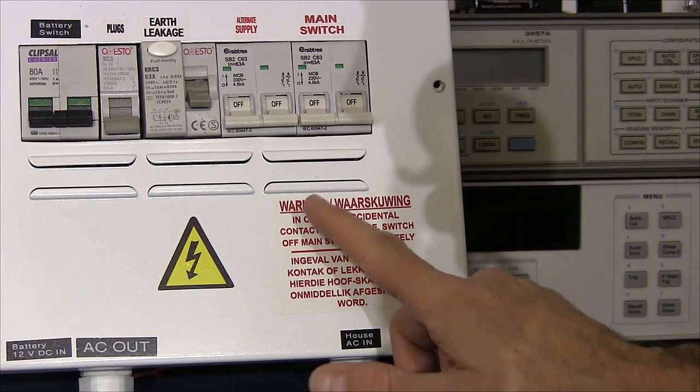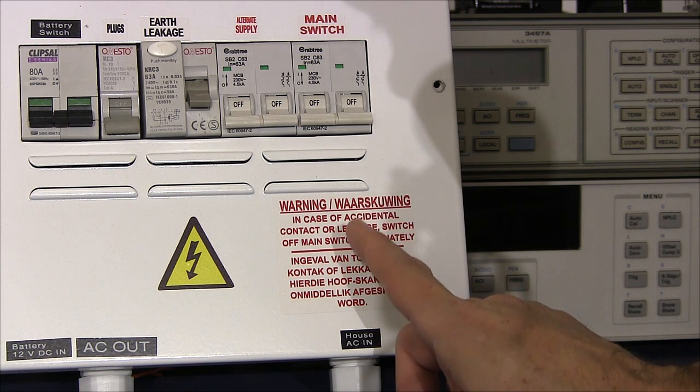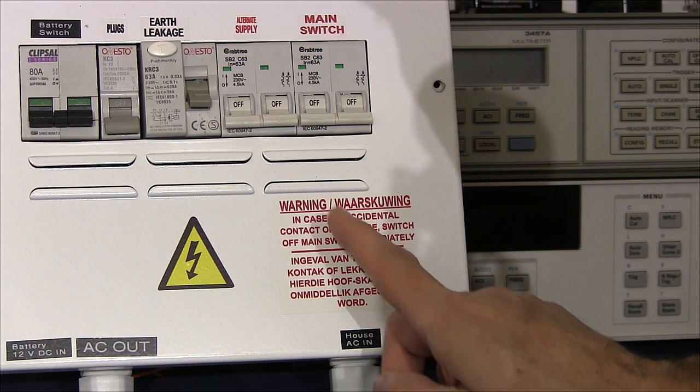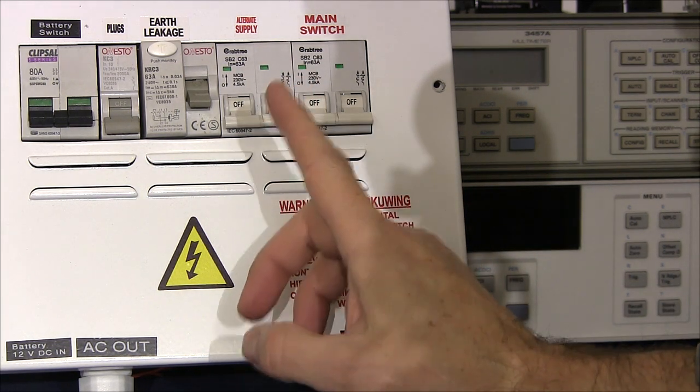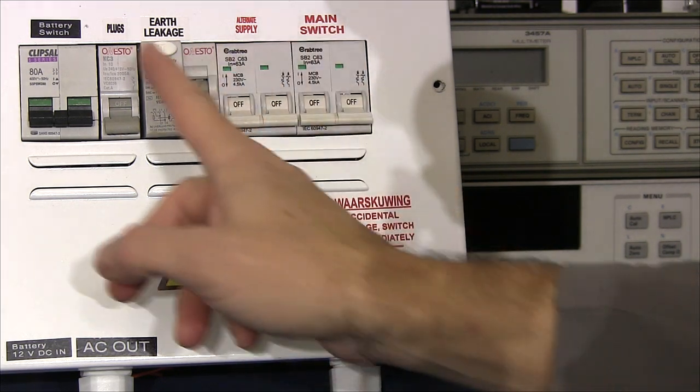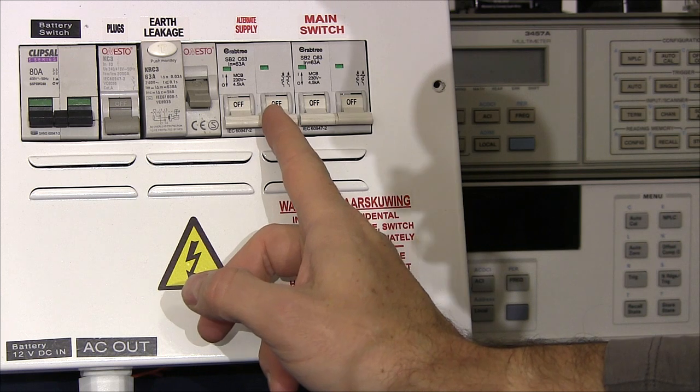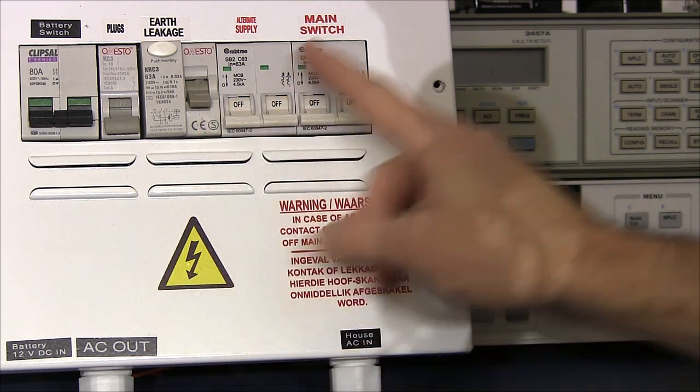One other important note I'd just like to make before we go inside the DB board. So far in virtually every single property I've owned the DB board has been labeled incorrectly. Over time someone's made a change, they've made additions, they've added further equipment and they've not bothered to update the labels on the switches and that can be very dangerous when someone's trying to do some work.